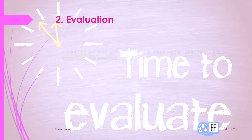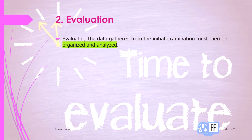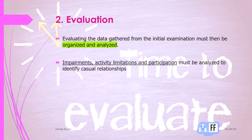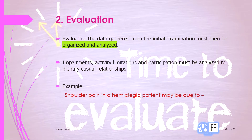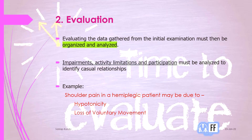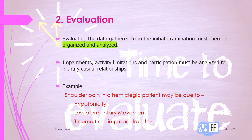Now for evaluation: whatever data you have gathered from the initial examination must be organized and analyzed. Impairments, activity limitations, and participation must be analyzed to identify causal relationships. For example, shoulder pain in a hemiplegic patient may be caused by hypotonicity — that is, decreased tone of the muscles — loss of voluntary movement, and trauma from improper transfers.